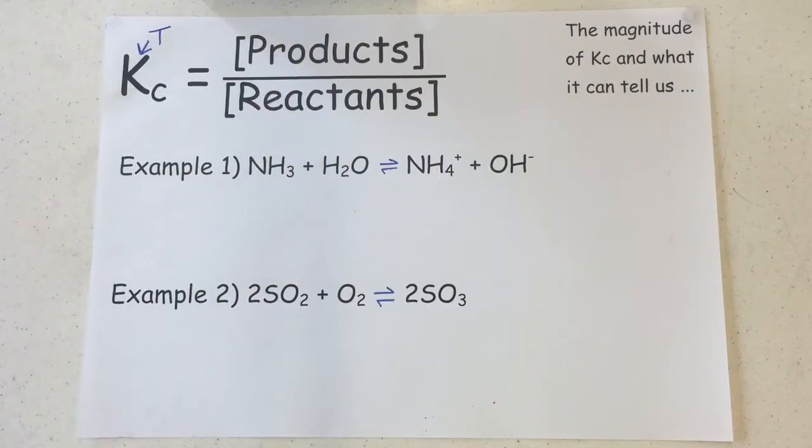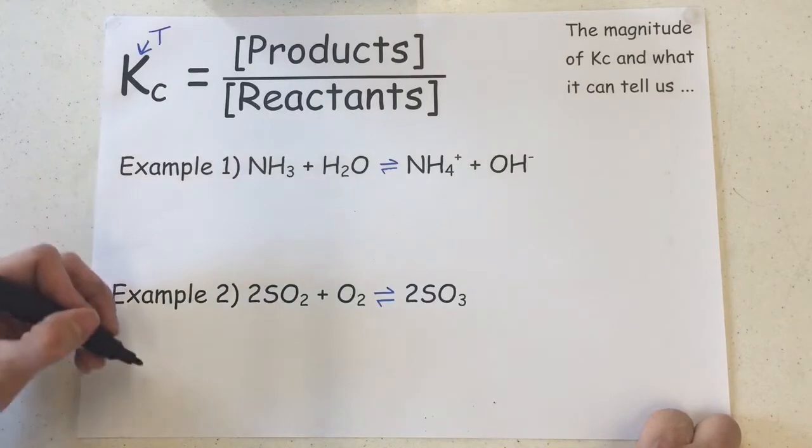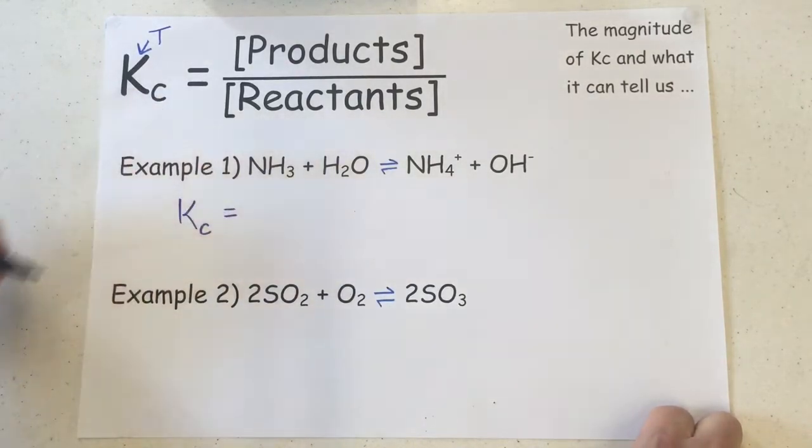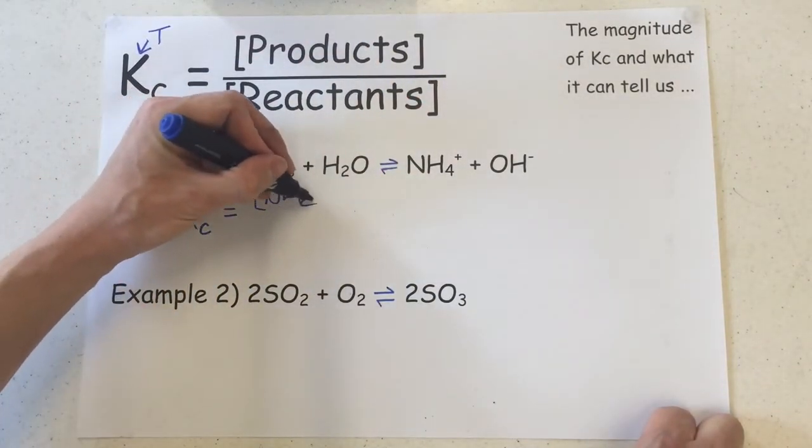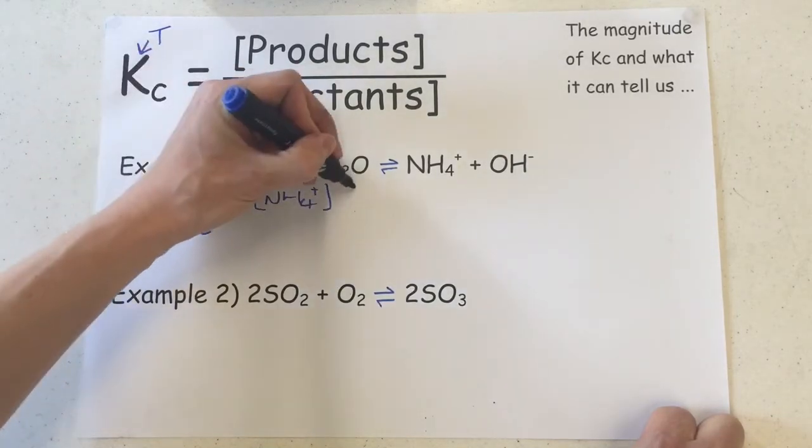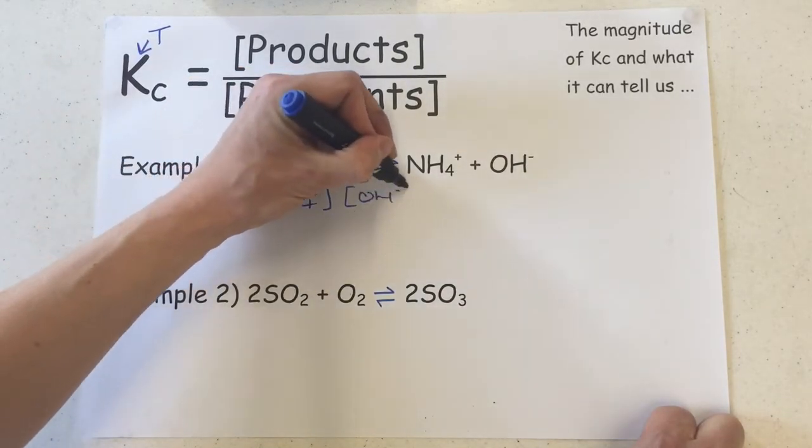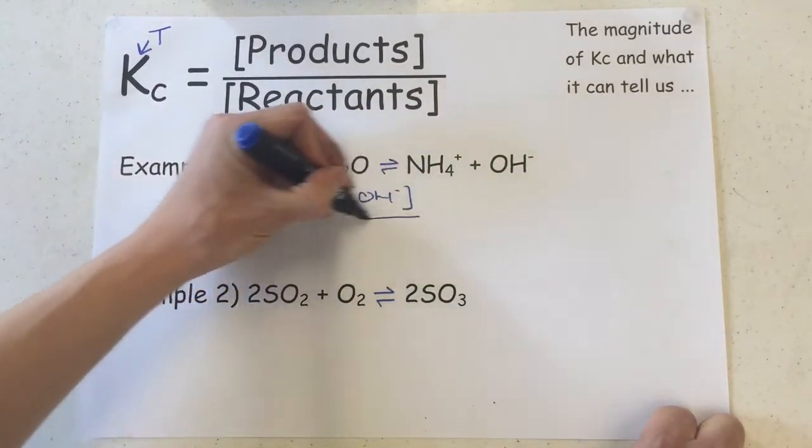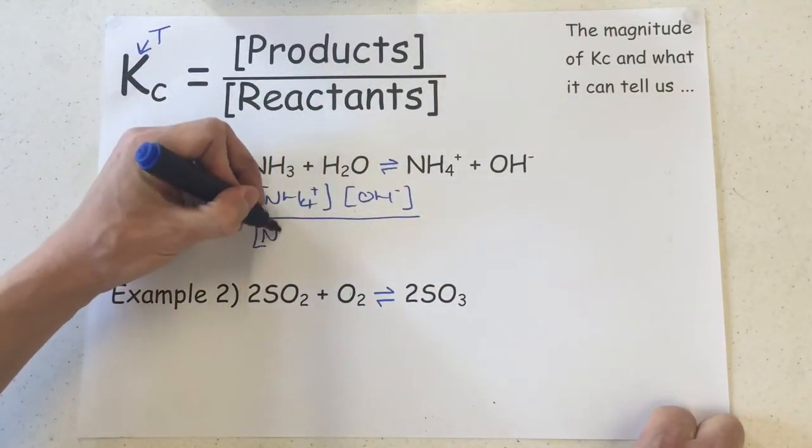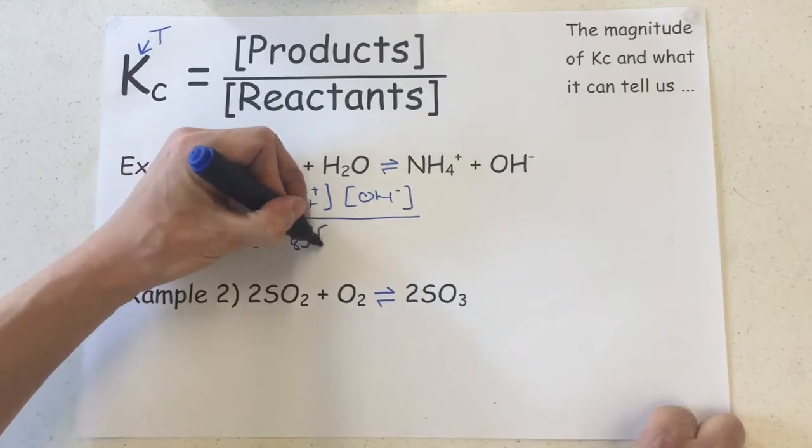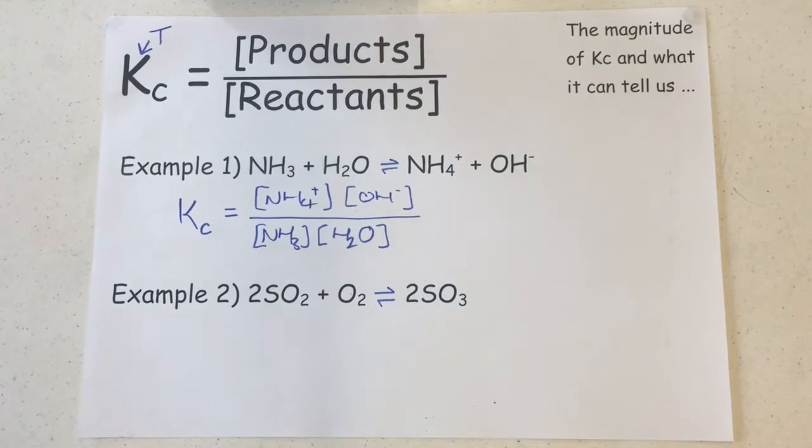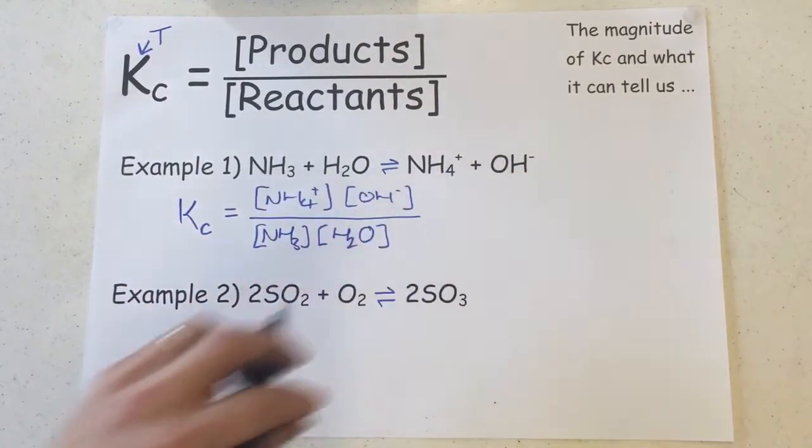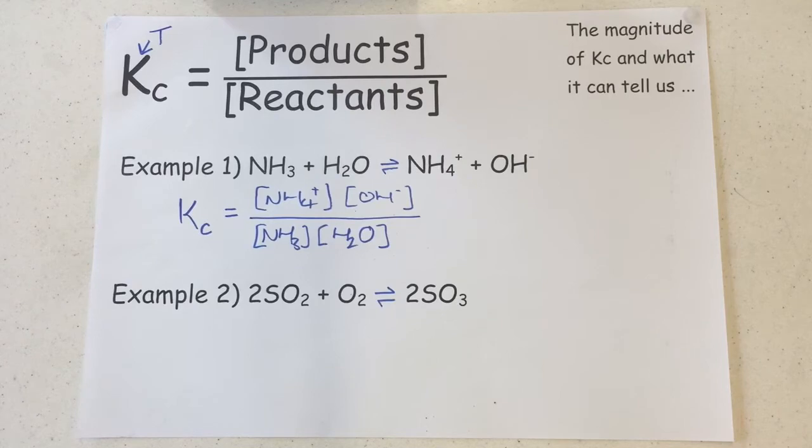Let's have a look at an example of how we write a KC expression. If we are asked to state or write the KC expression for a particular equilibrium, all we have to do is take the products and write them out separately, timesing them together on the top part here, and divide that by the reactants, like so. There's no powers here outside the square brackets because nothing had a coefficient in the balancing of the above equation.